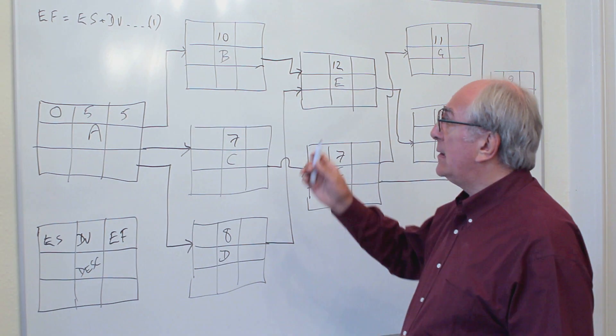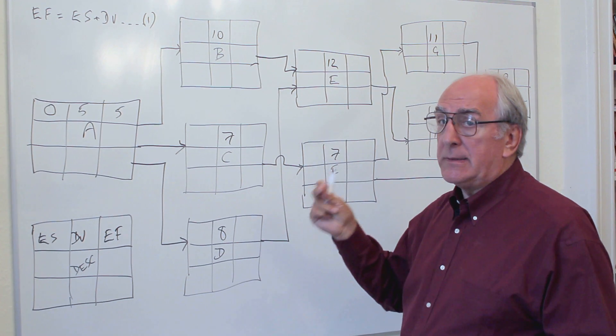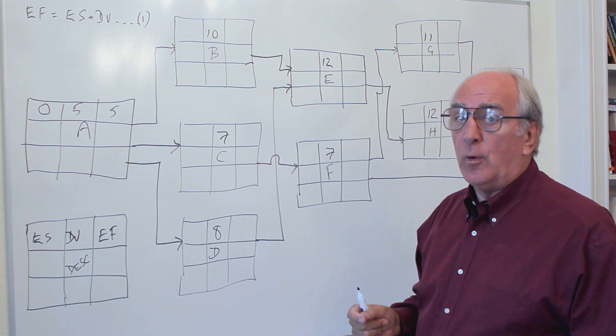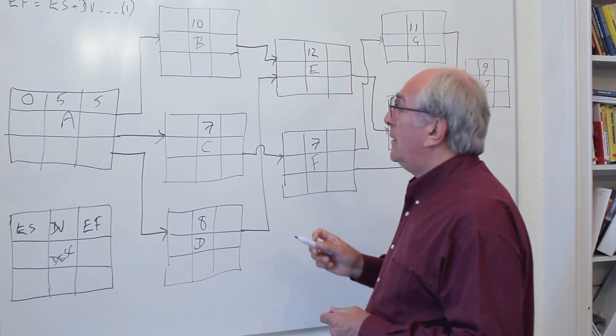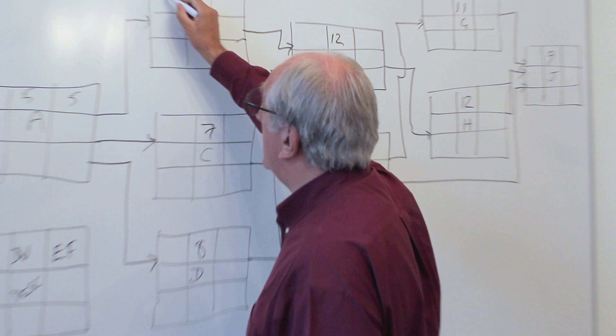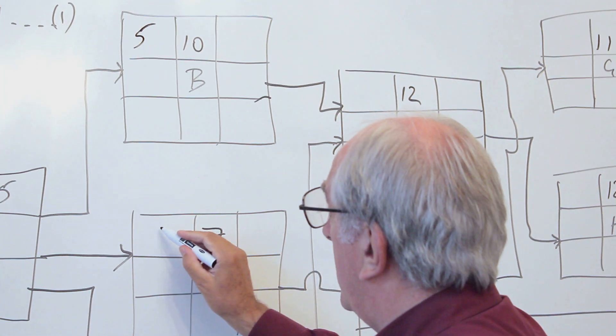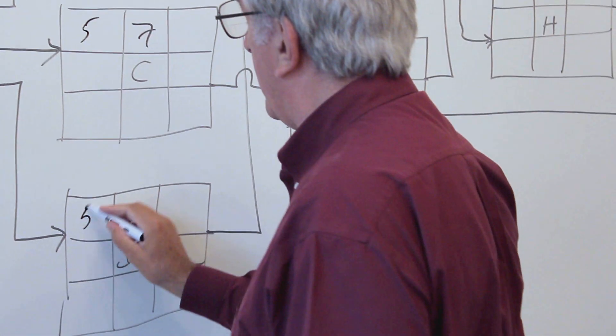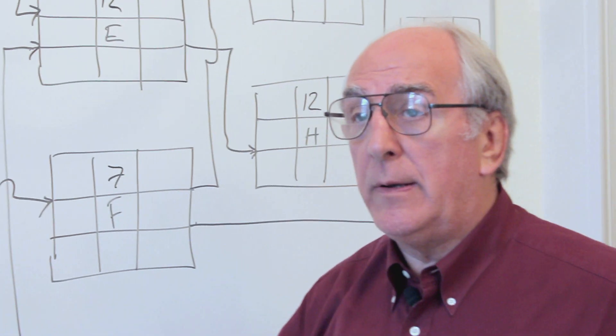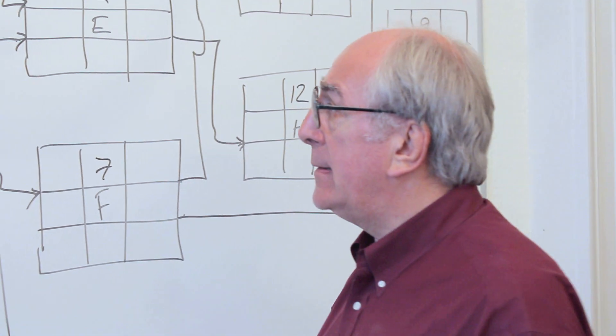We now need to know what's the earliest possible time we can start activities B, C, and D. By the same reason we used for time zero, we're going to say we can start B absolutely a tiny period before the end of period five. So we're going to say that starts at period five, period five, period five. We're not worrying about anything other than these pure time units.